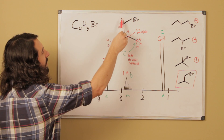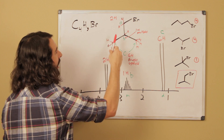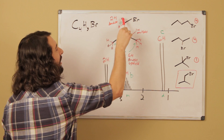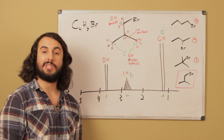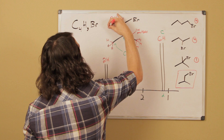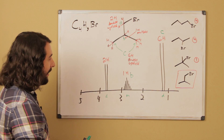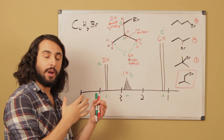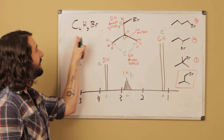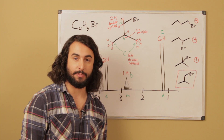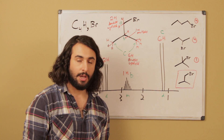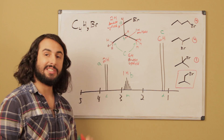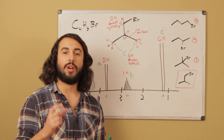Finally, for the two CH2 protons at position A: the signal integrates to 2, there is one adjacent proton so it's a doublet, and these protons are the closest to the bromine so we'd expect them to be the furthest downfield. That corroborates this is peak A. To summarize, when figuring out the structure from an NMR spectrum, we can either draw all possible structural isomers from the empirical formula, or we can piece together the structure from the NMR data using integration, splitting, and chemical shift.